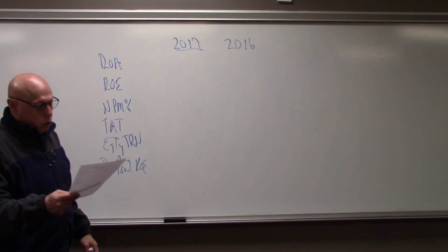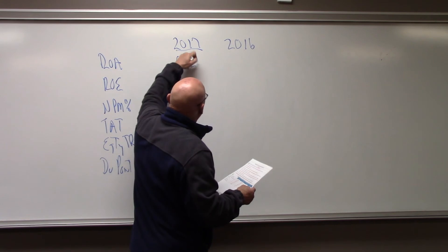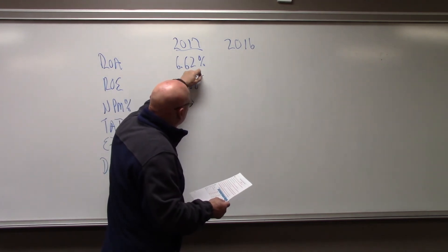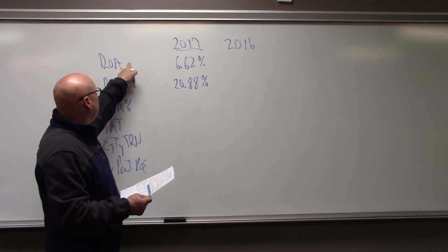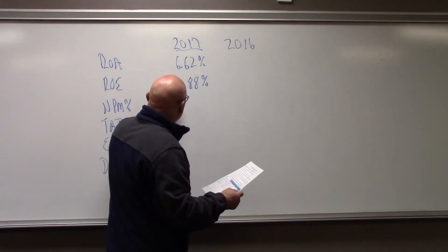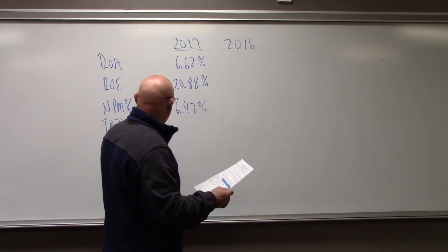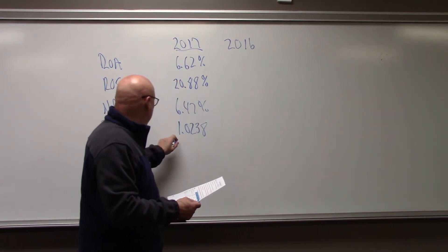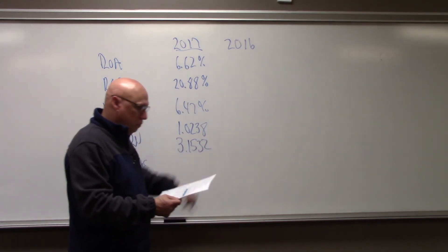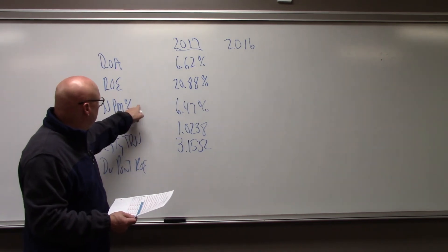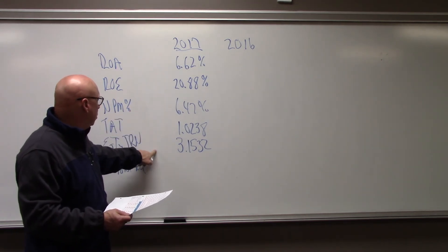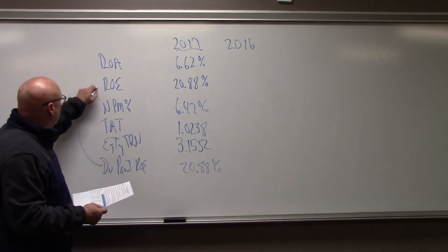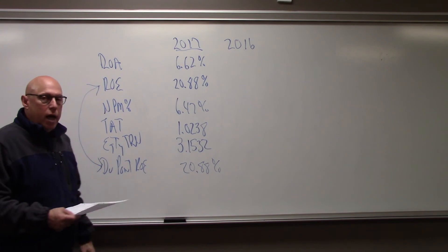Return on assets in 2017 is 6.62%. Return on equity is 20.88%. The difference between this and this: leverage. Net profit margin percentage, 6.47%. Total asset turnover, 1.0238. The equity turnover, 3.1532. If you multiply this times this times this, you will get 20.88%, or something very close, because DuPont and short form ROE have to equal the same.